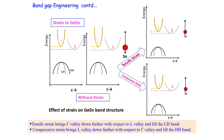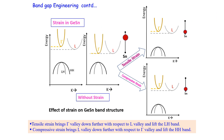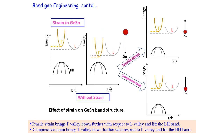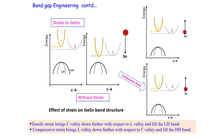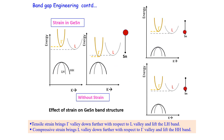By incorporating a small amount of tin into germanium, we form GeSn, where the gamma valley moves downward faster, making it a direct band gap material. Using tensile strain brings the gamma valley down further with respect to the L valley, lifting the light hole and heavy hole bands. Using compressive strain, we see the reverse effect.